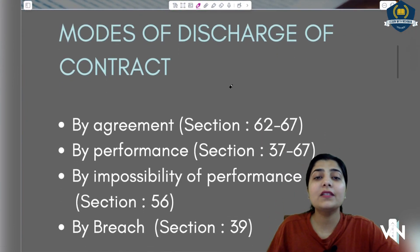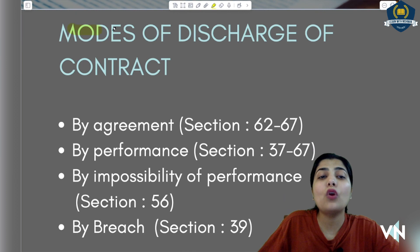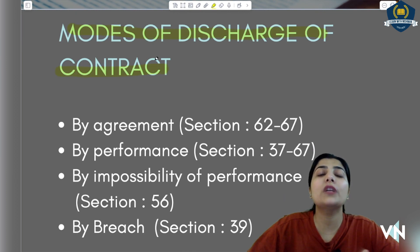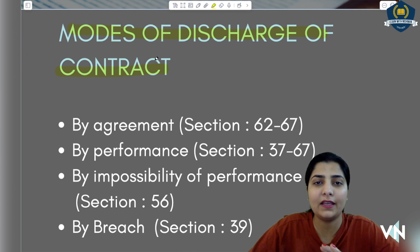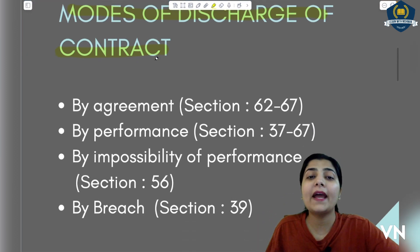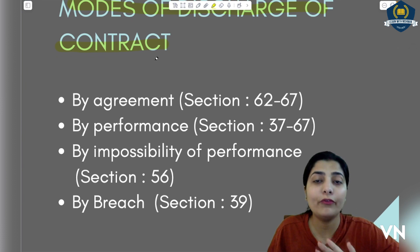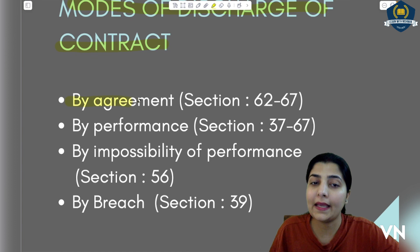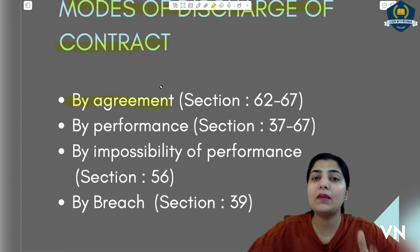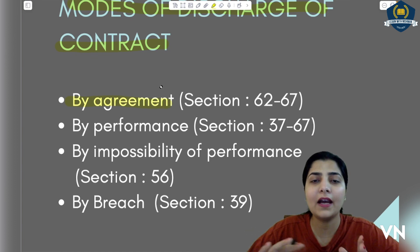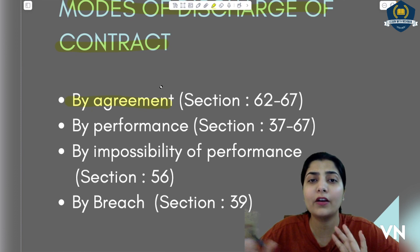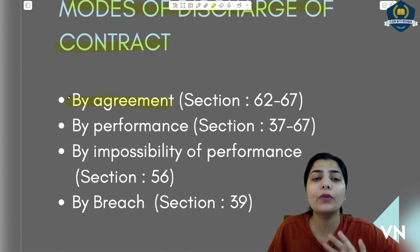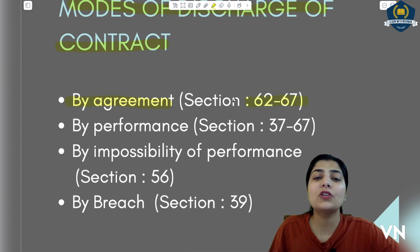The very first thing we have is modes of discharge of contract — how and in how many ways parties become free from a contract. The Indian Contract Act gives us 4 ways. The very first is by agreement: parties can agree among themselves that they no longer want to keep their contract — let's end it or make a new one. That is discharge through a written document by agreement, given in sections 62 to 67, and today's session is based on this topic.